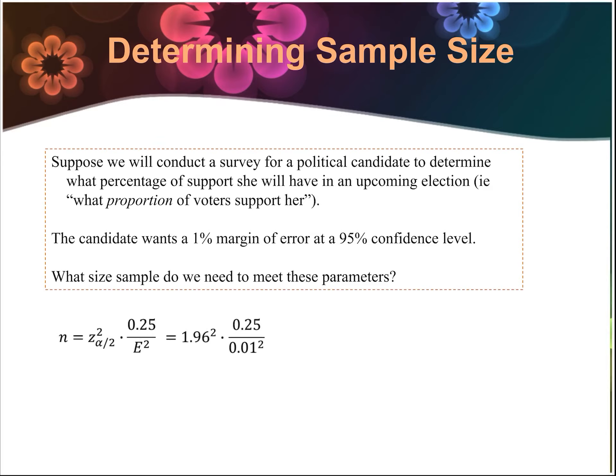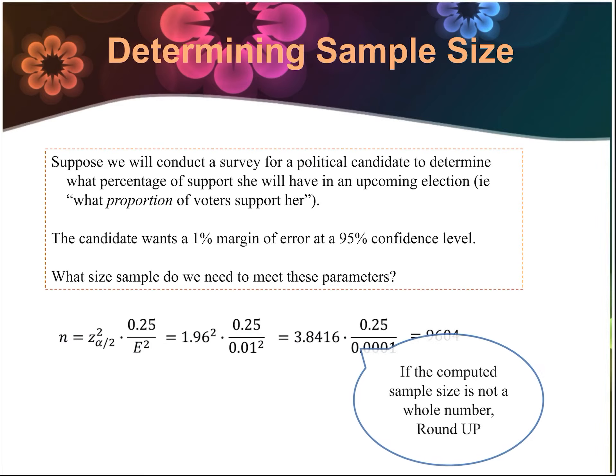For a 95% confidence level, the z-value is 1.96. So our sample size n equals 1.96² times (0.5 × 0.5) divided by 0.01², which gives 0.25 in the numerator and 0.0001 in the denominator, resulting in a sample size of 9,604. If the sample size is not a whole number, always round up — no matter what decimal you get, even 9,603.1 rounds up.